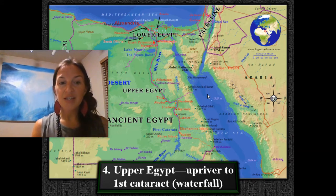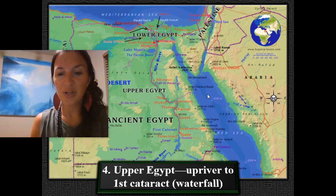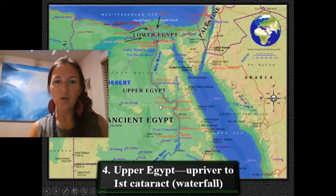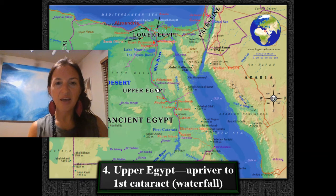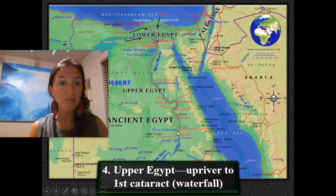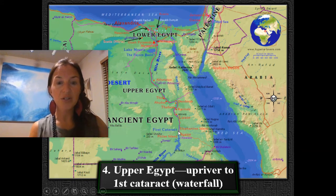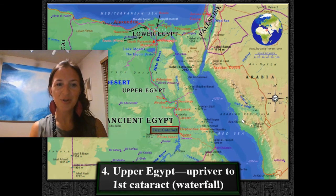So this is Day 10, 10B. The fourth note to write down is that Upper Egypt was actually here, south of Lower Egypt. It was upriver or higher elevation, higher above sea level. This region extended to the first cataract, which was a major waterfall that was difficult to traverse, and it kind of united this region separate from other regions.